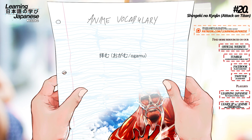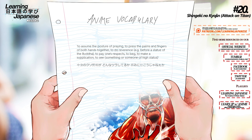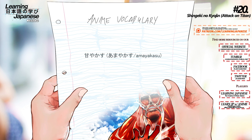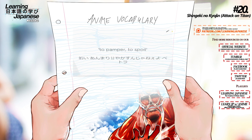拝む (ogamu) — To assume the posture of praying, to press the palms and fingers of both hands together, to do reverence, to pay one's respects, to beg, to make a supplication, to see. 甘やかす (amayakasu) — To pamper, to spoil.